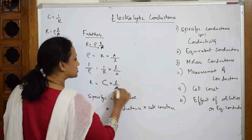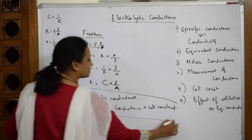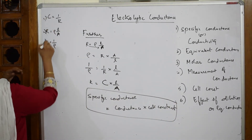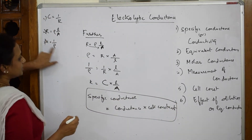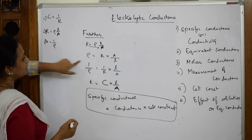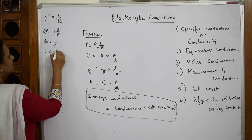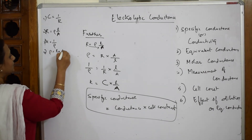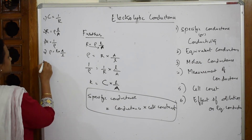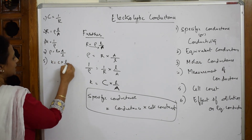This is one important derivation. To recap: from the basic formulas, I derived that ρ = R × A/L, and therefore κ = 1/ρ = C × L/A, where C is conductance and L/A is the cell constant. So specific conductance equals conductance multiplied by cell constant.